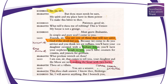Brabantio says, 'This thou shalt answer. I know thee, Roderigo.' And Roderigo replies, 'Sir, I will answer anything.' Again, Roderigo is deliberately there to juxtapose Iago so that Iago looks even more villainous by contrast.